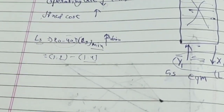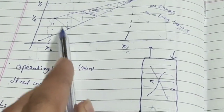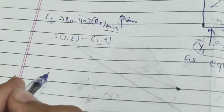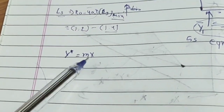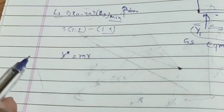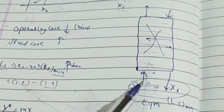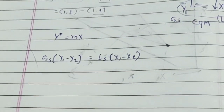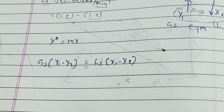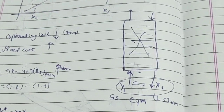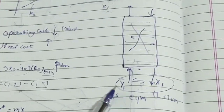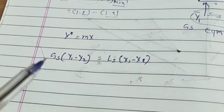That is why LS minimum calculation is very important for practical purposes. It was also asked in the GATE 2019 exam. To calculate LS minimum, you first need the equilibrium relationship. The equilibrium line follows Y* = mX, and you also have the operating line material balance equation derived in the first video: GS times (Y1 minus Y2) equals LS times (X1 minus X2).